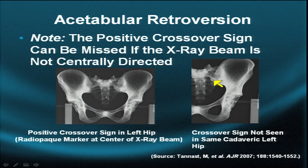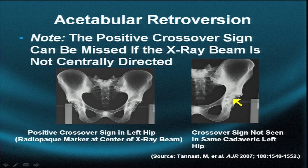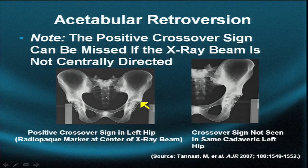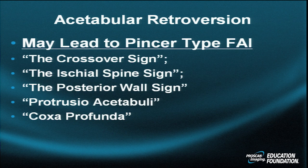Another measurement is the acetabular retroversion sign, also known as the crossover sign, in which the relationship between the anterior and posterior walls of the acetabulum are evaluated. In a properly positioned cadaveric specimen, the anterior wall will always lie medial to the posterior wall and they will never crisscross. But in the retroversion situation, the anterior and posterior walls do make a crisscross or loop as they descend and switch positions — thus the crossover sign is elicited.